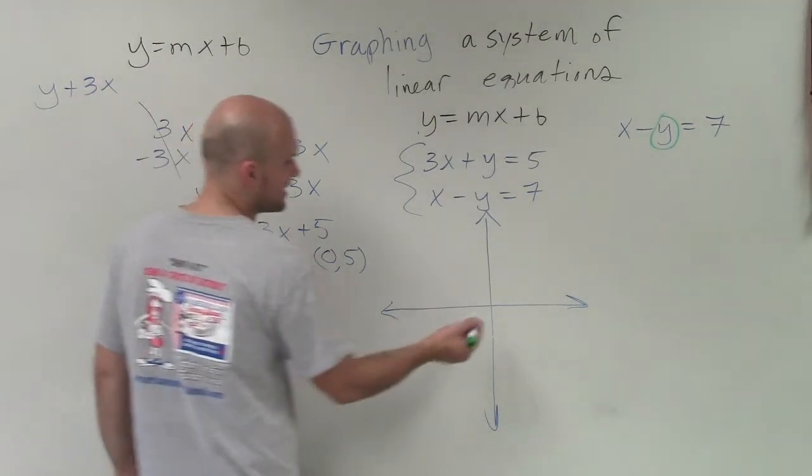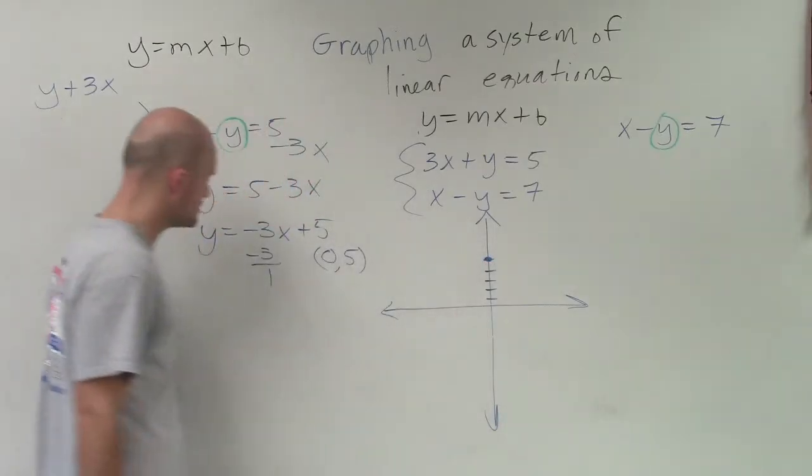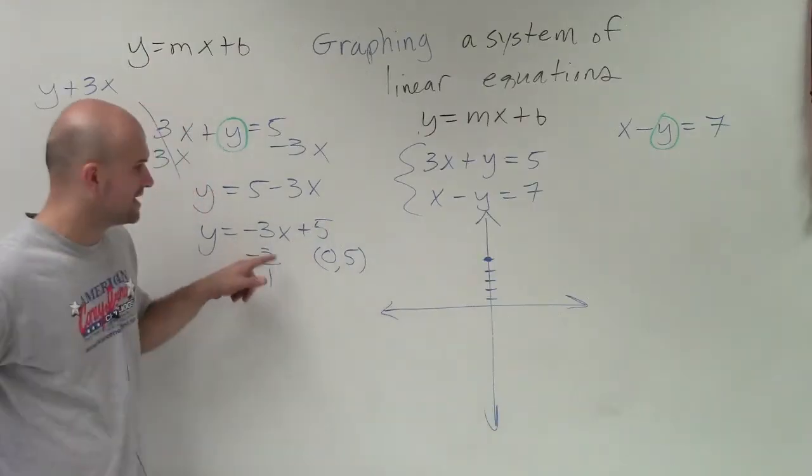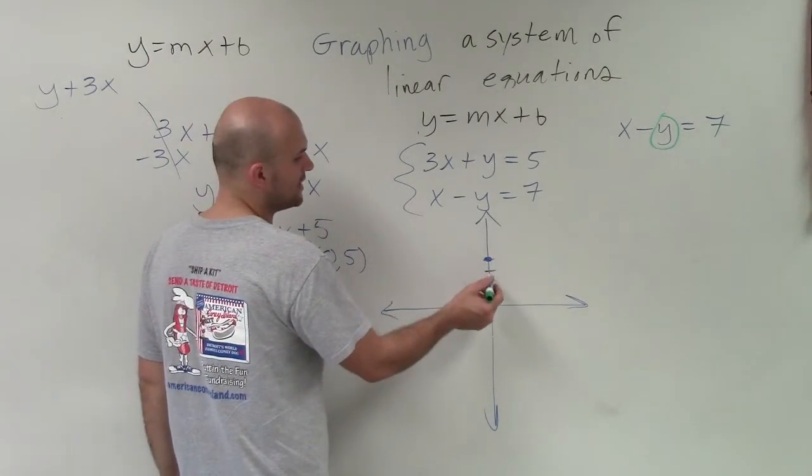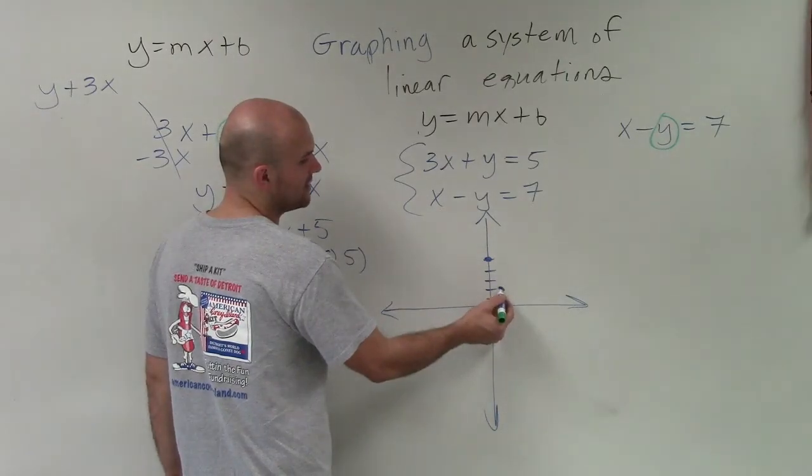So now, to graph this, I go up 5: 1, 2, 3, 4, 5. And now, since my rate of change is negative, it can either be negative up top or in the bottom. It doesn't really matter. But if I keep the negative sign up top, that's going to tell me to go down 3. And then that's in the negative direction. And then over 1 in the positive direction.